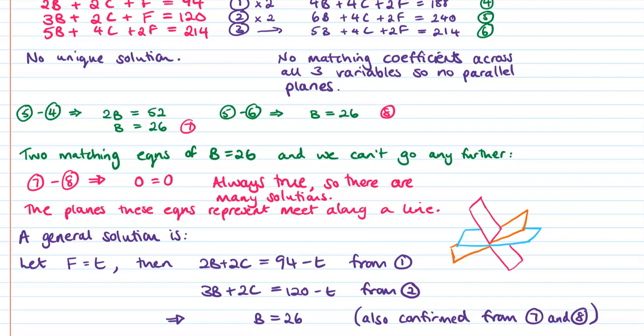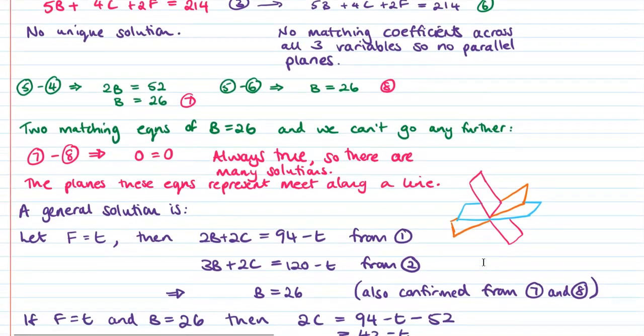So the planes that these equations represent meet along a line like this. And we have the book situation, which means that we then need to go on and find a general solution and a specific example.